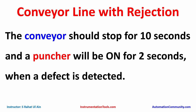Then a puncher will be activated for two seconds and the conveyor will once again start. For this example we will use normally open contacts and normally closed contacts, and we will also be using some timers like TP. Let's move to TIA Portal where we will draw a ladder diagram for this conveyor line with rejection example.